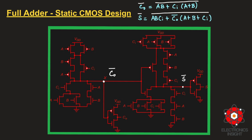For the pull-down network of the carry circuit, we directly use the non-complemented expression a·b + ci·(a+b). The ci·(a+b) term means ci is in series with a parallel combination of a and b transistors. The a·b term means a and b transistors are in series, placed in parallel with the ci·(a+b) branch. The pull-up network is the exact dual (vice versa). The node output is C₀_bar; a CMOS inverter then yields the actual carry out.